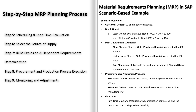Next, SAP determines the source of supply for materials. For externally procured materials, SAP identifies potential vendors and generates purchase orders. For internally produced materials, SAP ensures that the production department can handle the required production capacity and that work centers are scheduled. Then comes BOM explosion and dependent requirements determination — for materials produced in-house, SAP performs a Bill of Materials explosion to identify the dependent requirements.